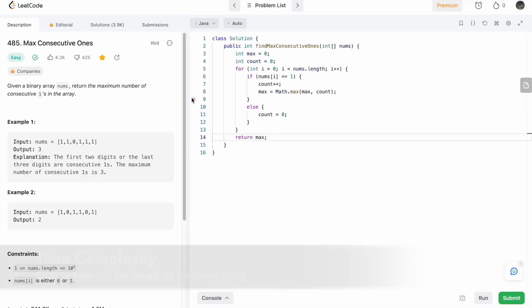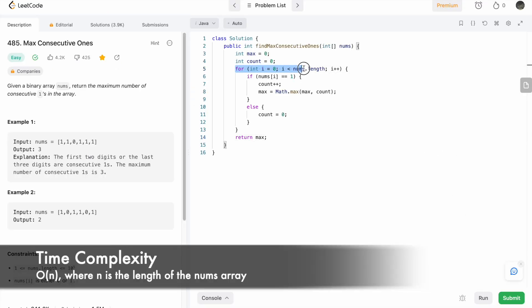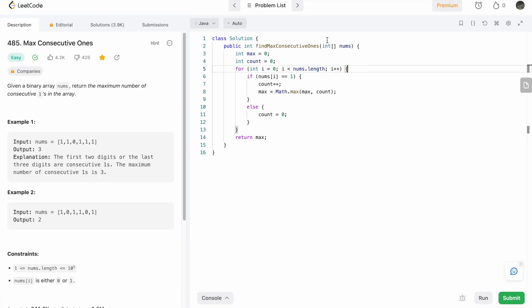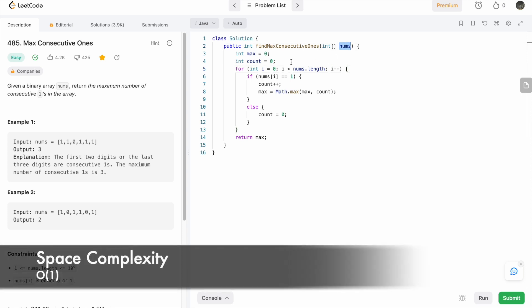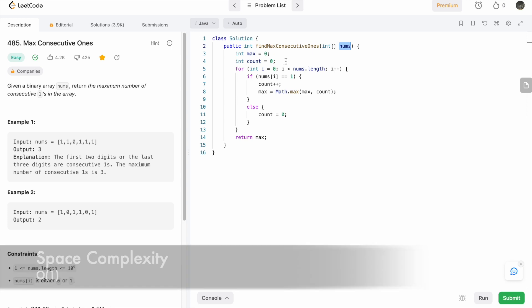The time complexity of this approach is O(n), where n is the number of elements inside the nums array. The space complexity is O(1) because we are not using any extra data structure to solve this question. That's it guys, thank you for watching and I'll see you in the next video.